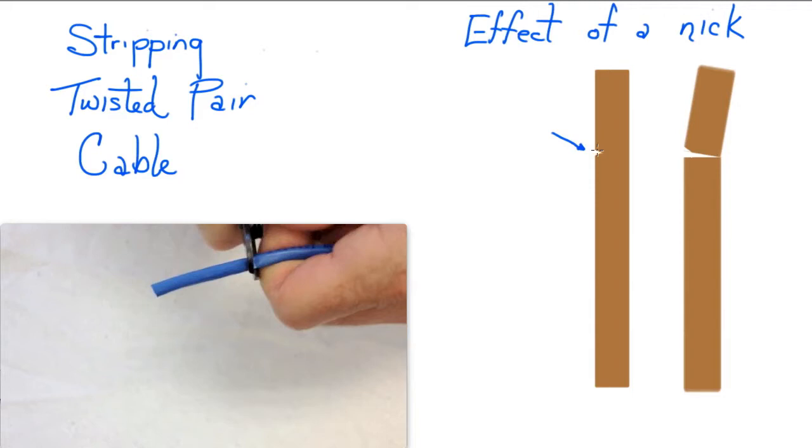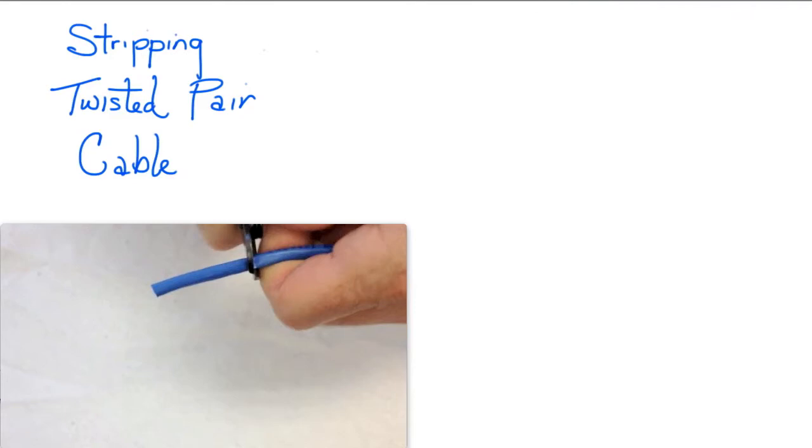That can cause some damage because a nick will travel across as this gets flexed and in time you'll get something like this and then wire will become intermittent. So I want to show you a couple different techniques that you can use to strip cable successfully.